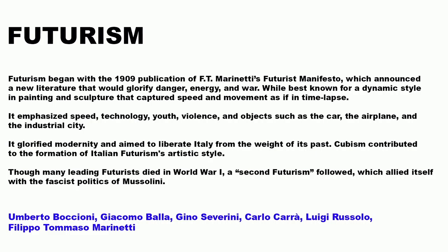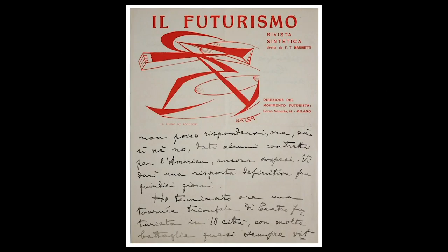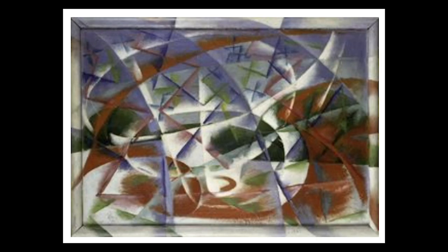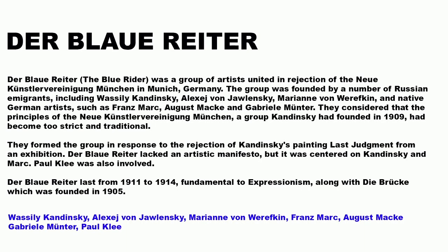Futurism began with the 1909 publication of F.T. Marinetti's Futurist Manifesto, which announced a new literature glorifying danger, energy, and war. Best known for a dynamic style in painting and sculpture that captures speed and movement, it emphasized speed, technology, youth, violence, and objects such as the car, the airplane, and the industrial city. It glorified modernity and aimed to liberate Italy from the weight of its past. Cubism contributed to the formation of the Italian Futurist artistic style. Though many leading Futurists died in World War I, a second Futurism followed, allied with the fascist politics of Mussolini. You can see Futurist paintings representing movement here.